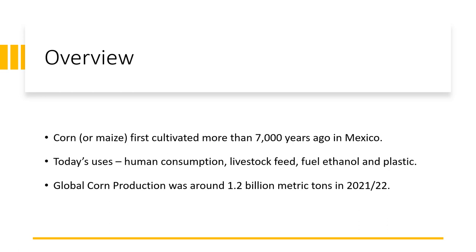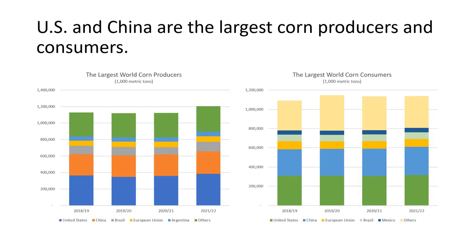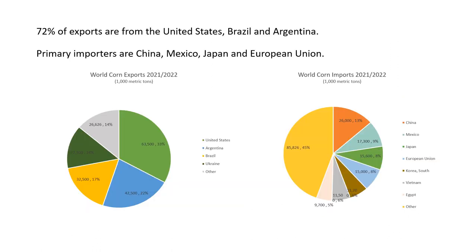Global corn production was around 1.2 billion metric tons in the 2021-22 marketing year. A marketing year is defined as a period of 12 months during which the commodity is produced, harvested, and sold. Marketing years span the calendar year and differ among commodities. The corn marketing year begins September 1st and ends August 31st. The United States and China are the largest producers and consumers of corn in the world. Seventy-two percent of exports are from the United States, Brazil, and Argentina, whereas primary importers are China, Mexico, Japan, and the European Union.